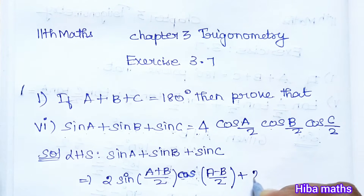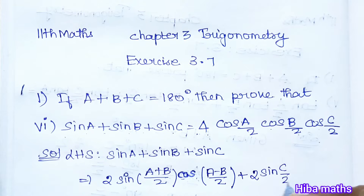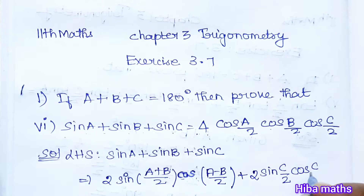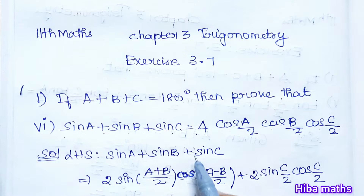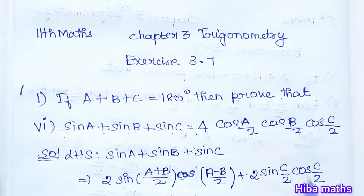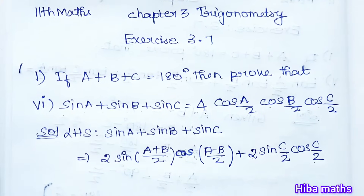Now for sin c: since a+b+c = 180°, we can write sin c using the identity sin c = 2·sin(c/2)·cos(c/2). This is the double-angle identity: sin A = 2·sin(A/2)·cos(A/2). Is that clear?